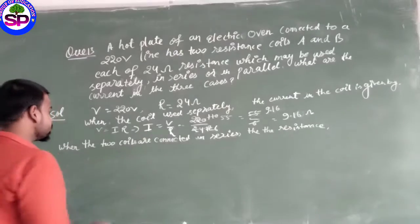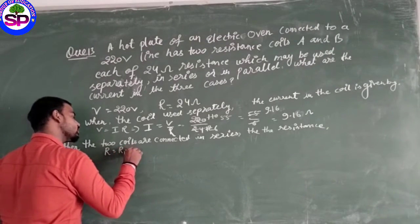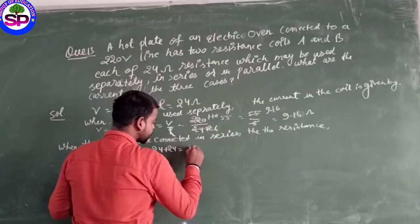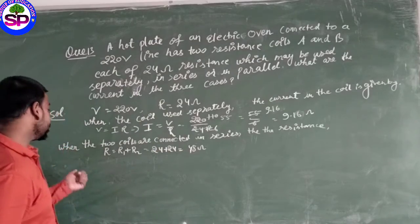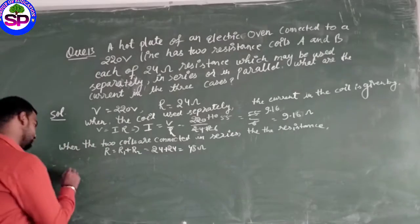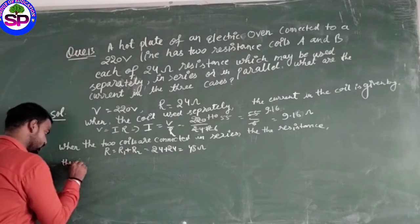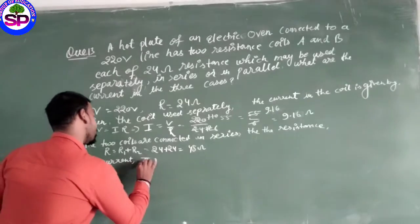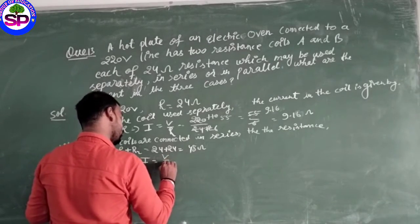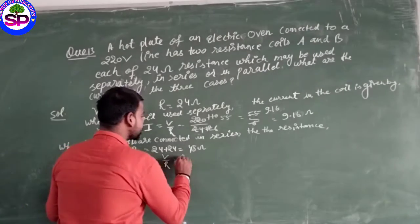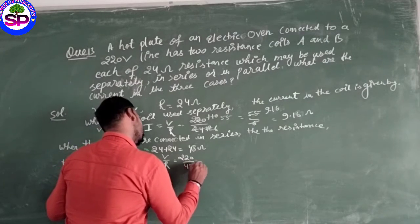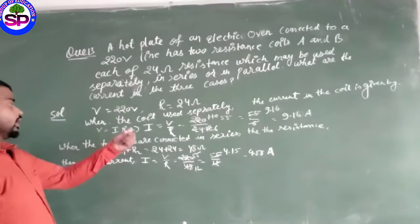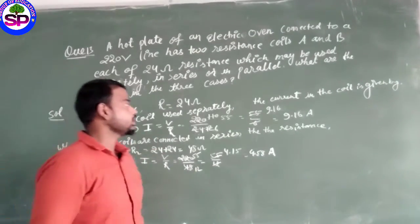The resistance, total resistance R is equal to R1 plus R2. R1 is 24, R2 is also 24, so this gives 48 ohm. Now the current I equals V upon R equals 220 upon 48. Now we will connect in parallel.